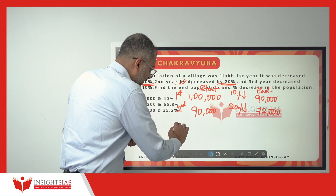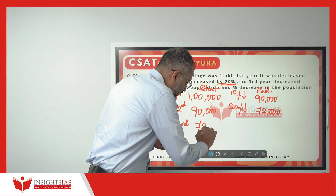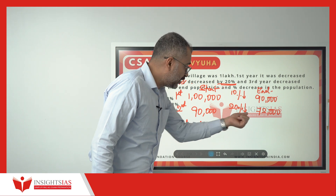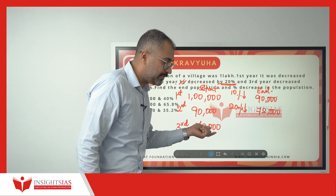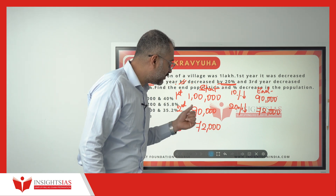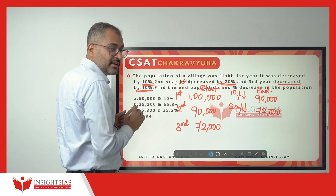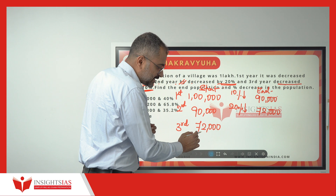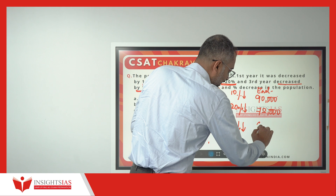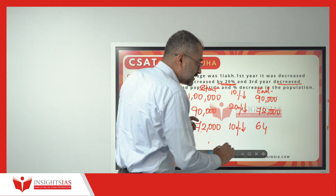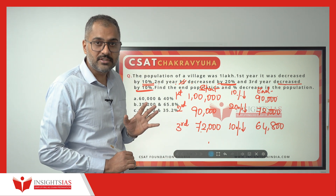When it comes to the third year, the starting population will be 72,000 — whatever the end of second year population was. Now, this 72,000 is decreased by 10% in the third year. 10% of 72,000 is 7,200. So 7,200 is decreased, and it becomes 64,800. The end population is 64,800.